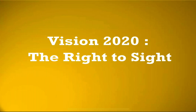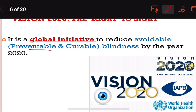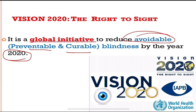Followed by Vision 2020 — the Right to Sight. It is a global initiative to reduce avoidable blindness — that is, blindness which is preventable and curable — by the year 2020. India is committed to this initiative.